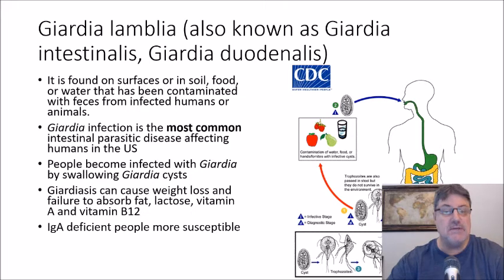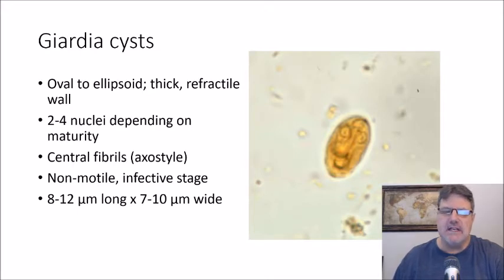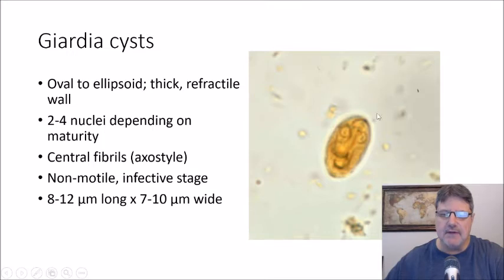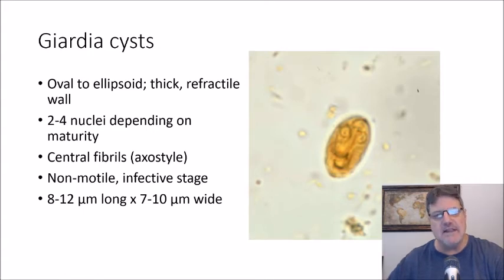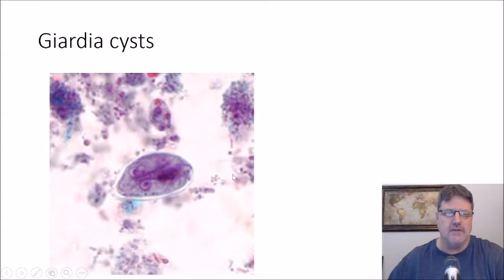The pathology can include weight loss and failure to absorb fat, lactose, vitamin A, and vitamin B12. It's known that IgA-deficient people seem to be more susceptible to Giardia infections. The cysts are oval to ellipsoid — you can usually see two to four nuclei depending on how mature it is, and an axostyle down the middle. It's the cyst stage, so it's non-motile and it's the infective stage. It's a rather small parasite.